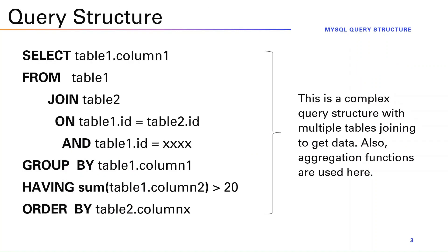To give you context on what we are going to cover, I've created a simple query structure. On the left hand side there is a SELECT statement joining two tables, with conditions, GROUP BY clause, HAVING clause, and ORDER BY. All these activities enable you to get data from the database, apply filters, and apply ordering.